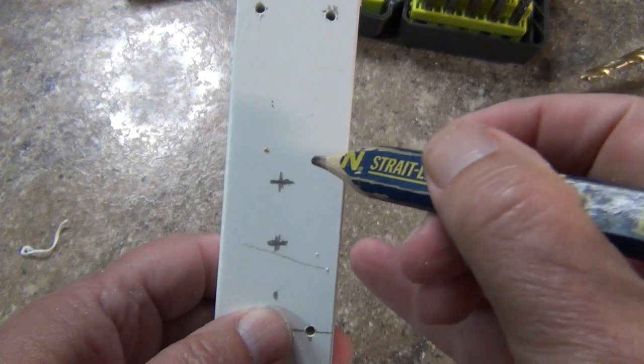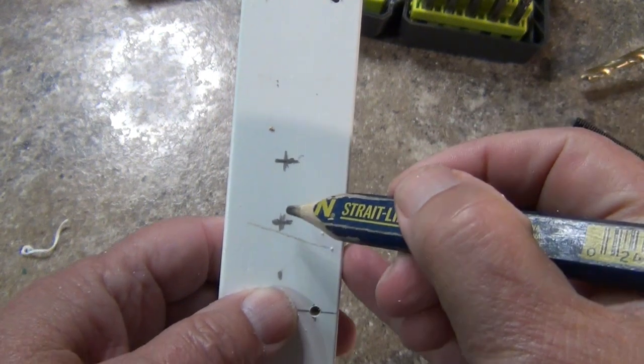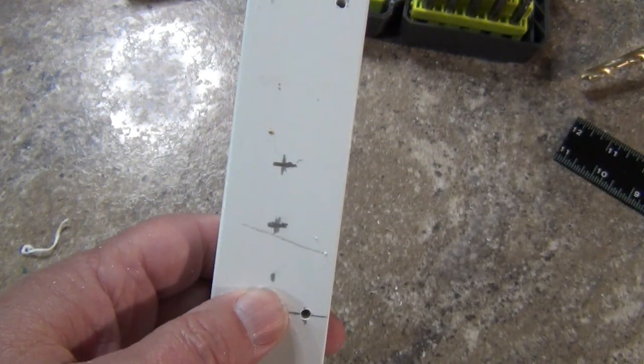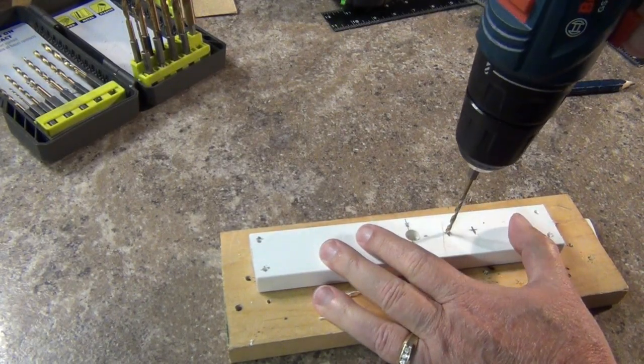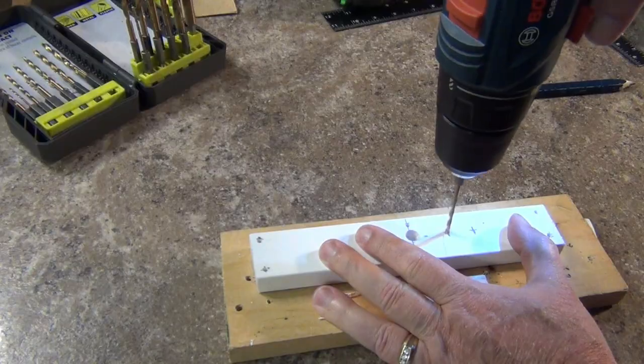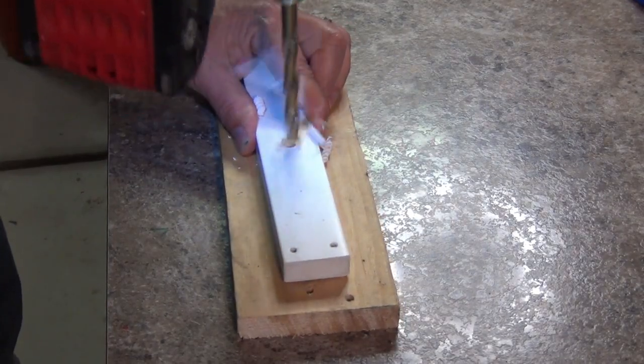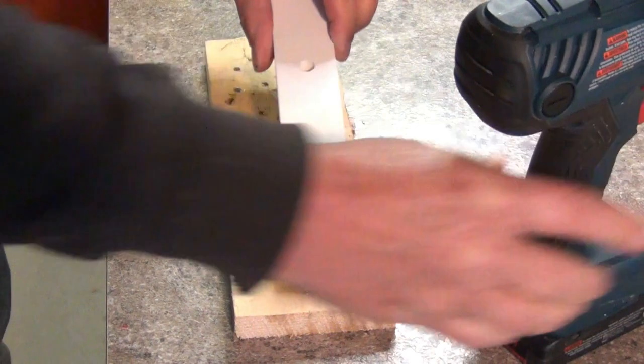Make two marks on the center of the board. The first at 1 inch from the center mark and the second at 1 3/4 inches. Drill pilot holes through these points too. Using a 3 1/8 inch drill bit, drill a hole at the center mark all the way through the board.